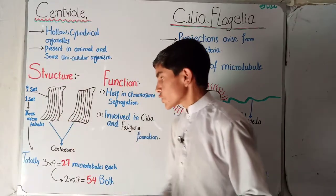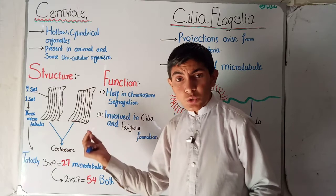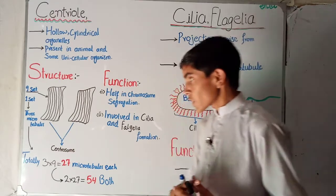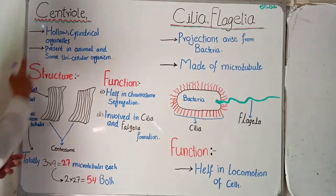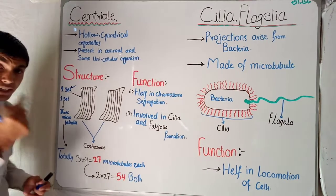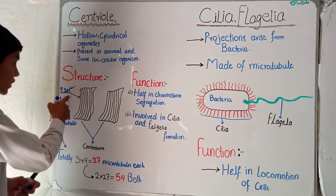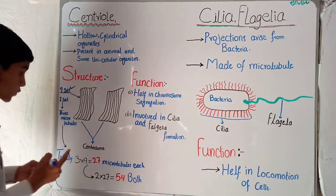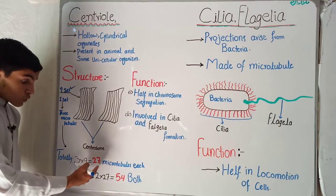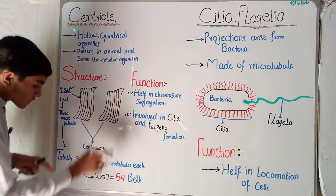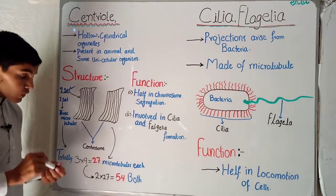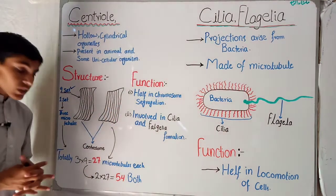Looking at the structure, these two are the centrioles — each one is called a centriole and both together are called the centrosome. Each centriole is made of nine sets of microtubules, and each set consists of three microtubules. So three multiplied by nine gives us 27 microtubules per centriole, and both centrioles together give us 54 microtubules.